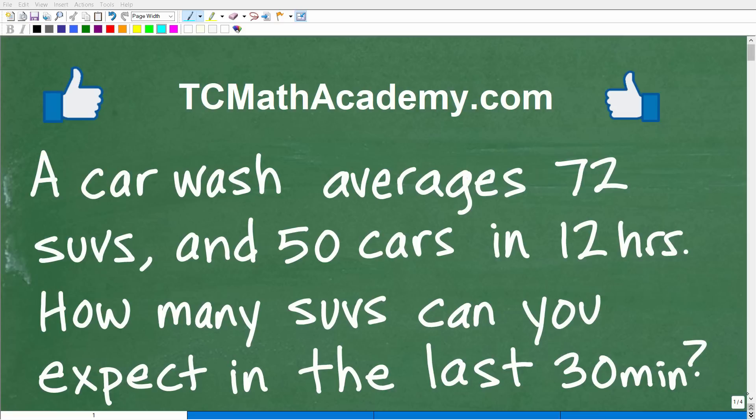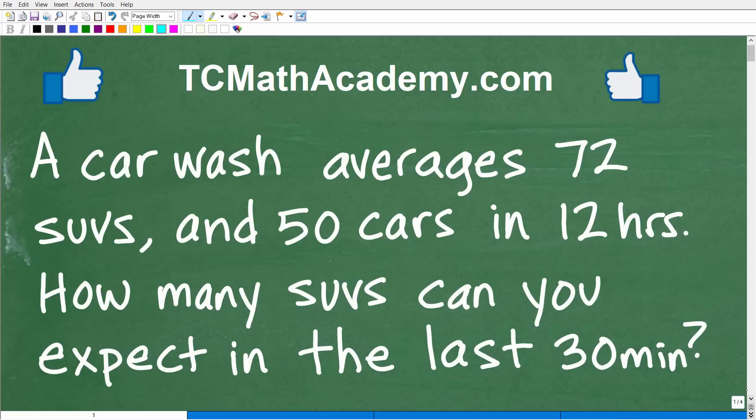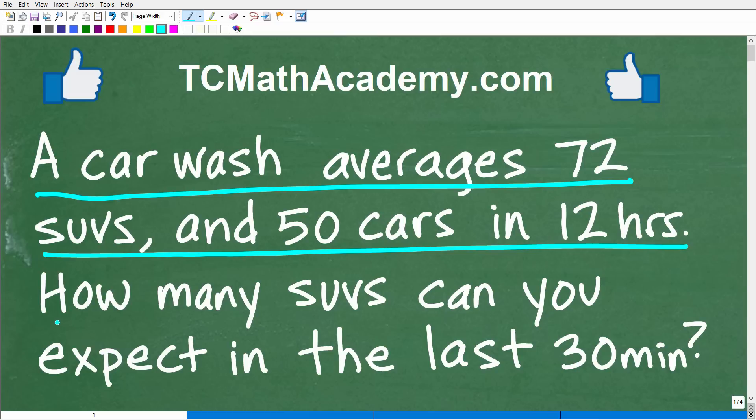Okay, so I have a very interesting math word problem here for you, and a lot of people might think that this is going to be a math trick problem. In other words, when you see the problem and I explain the solution, you're going to say this is a bit of a trick problem, but I can assure you this is not a trick problem. Matter of fact, let me go ahead and read it to you. A car wash averages 72 SUVs and 50 cars in 12 hours. How many SUVs can you expect in the last 30 minutes when this car wash is open?